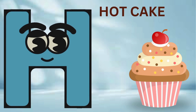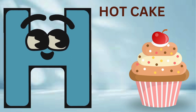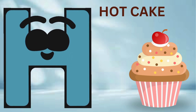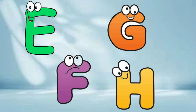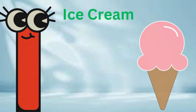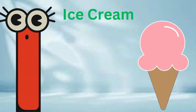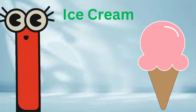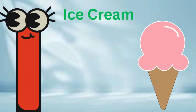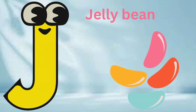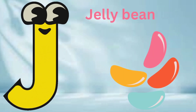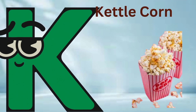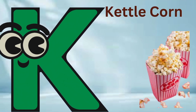H is for hot cake. H, H, hot cake. I is for ice cream. E, E, ice cream. J is for jelly bean. J, J, jelly bean.